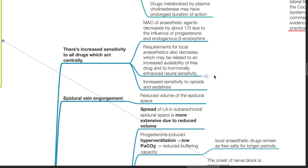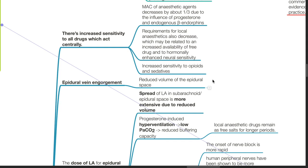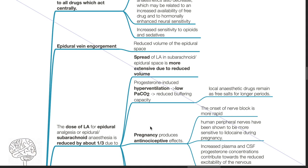Epidural vein engorgement and reduced volume of the epidural space occurs. The dose of local anesthetics for epidural analgesia or subarachnoid anesthesia is reduced by one-third, as the spread of local anesthetic in these spaces is more extensive due to their reduced volume.